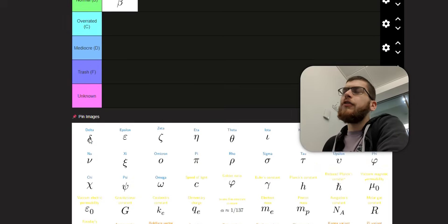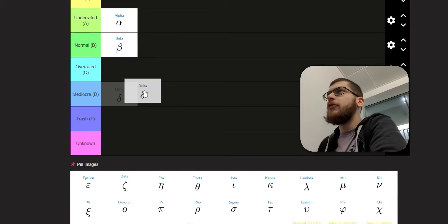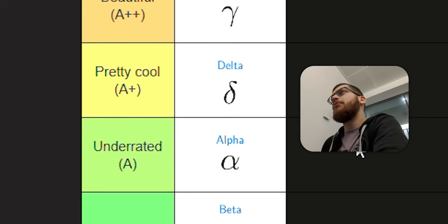Delta, the Kronecker delta. You can write it in a single line. It's a very solid mathematical symbol. Everyone knows that it's kind of mathsy, so I'll put it in pretty cool. Like this video, by the way, if you think that I'm pretty cool.